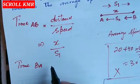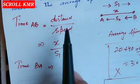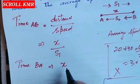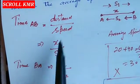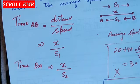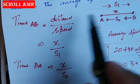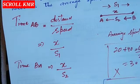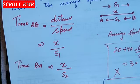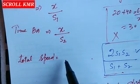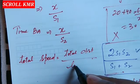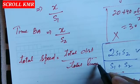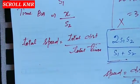B سے A تک جب Abdul واپس آتا ہے تو time = distance / speed۔ B سے A تک بھی distance x ہے لیکن speed ہے s2، تو time from B to A = x / s2۔ So: time from A to B = x/s1 and time from B to A = x/s2۔ اب total speed = total distance traveled divided by total time taken۔